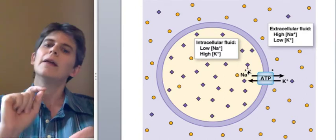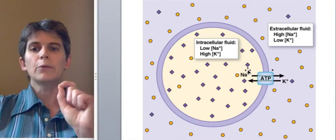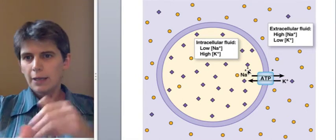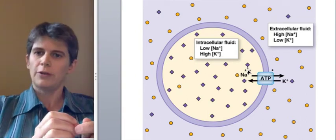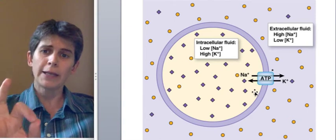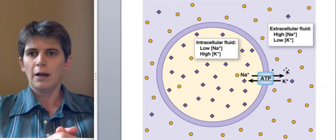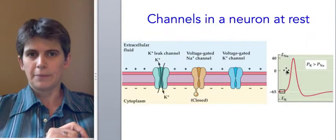So the pump creates a situation in which sodium and potassium are far from their equilibrium. And that means that if we create brief moments where they're allowed to move toward equilibrium, they will do so very quickly, creating a huge electrical change in that cell, and that's exactly what we want.